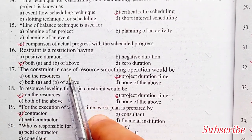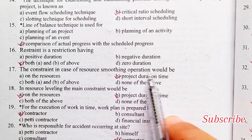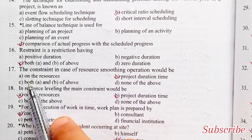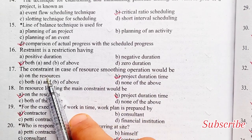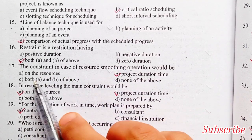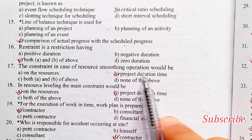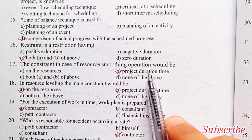The constraint in resource smoothing operation will be on: the resource, project duration time, both A and B, or none. Option B is the right answer — project duration time.